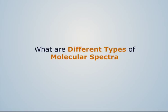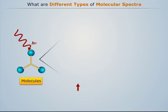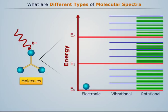What are different types of molecular spectra? When matter is exposed to electromagnetic radiations of a series of wavelengths, molecular spectrum is obtained.